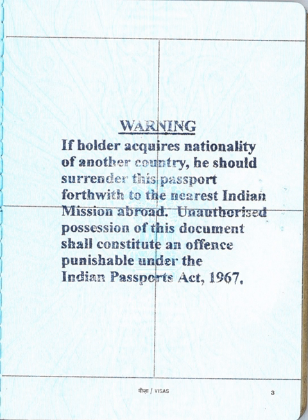Rule 3 of Schedule 3 of the Citizenship Rules 1956 states that the fact that a citizen of India has obtained a passport from the government of any other country shall be conclusive proof of his or her having voluntarily acquired the citizenship of that country before that date. This rule applies even if the foreign passport was obtained for the child by his or her parents, and even if possession of such a passport is required by the laws of a foreign country — for example, a US-born child of Indian parents who is automatically deemed a US citizen and therefore required by US law to hold a US passport to enter and leave the US. It does not matter that a person continues to hold an Indian passport. Persons who acquire another citizenship lose Indian citizenship from the date on which they acquire that citizenship or another country's passport.